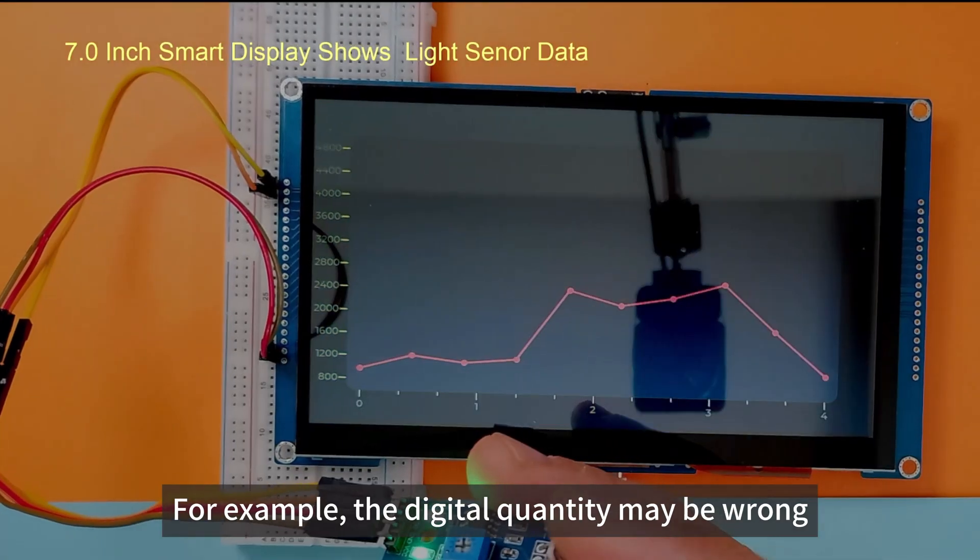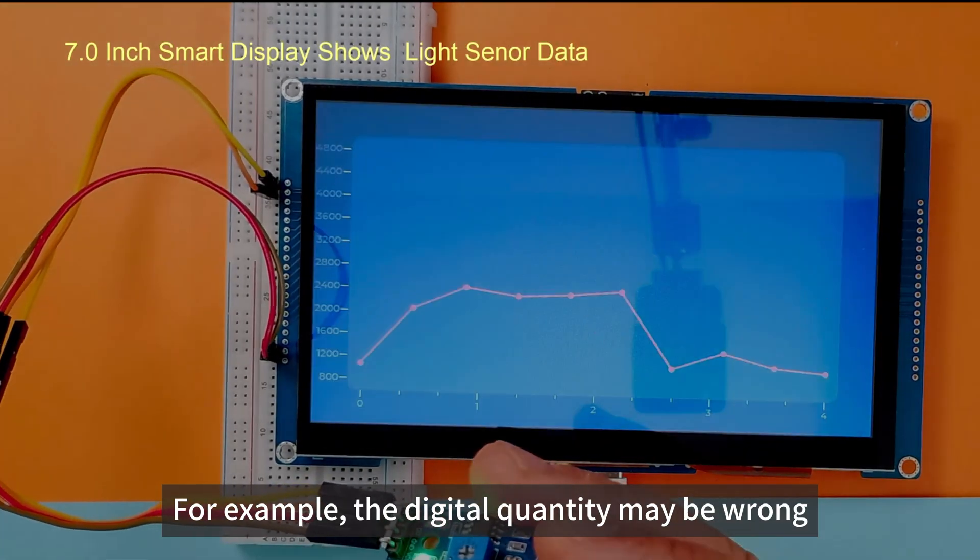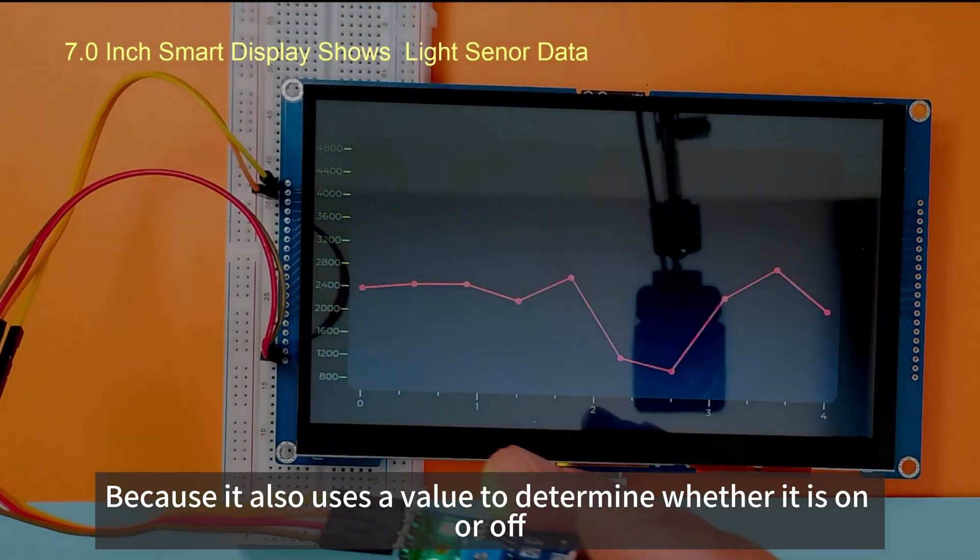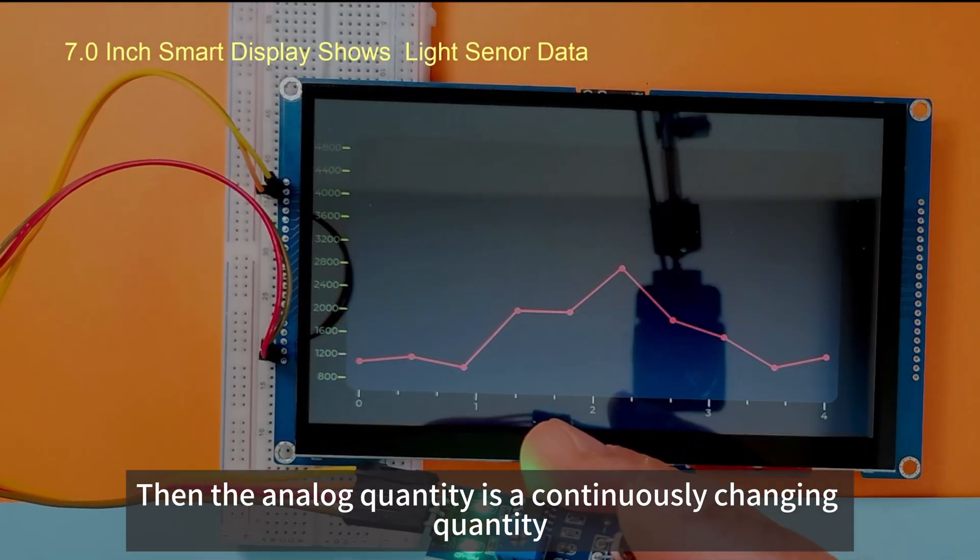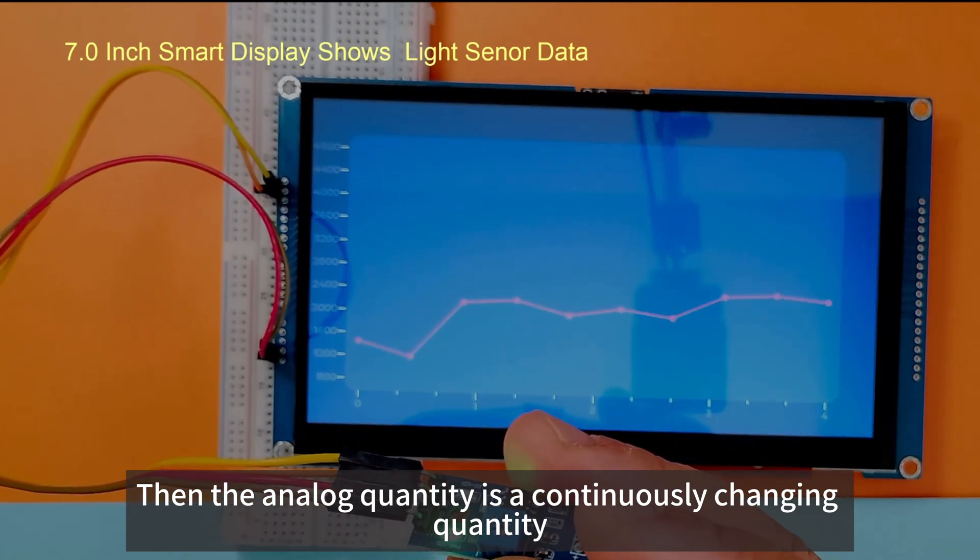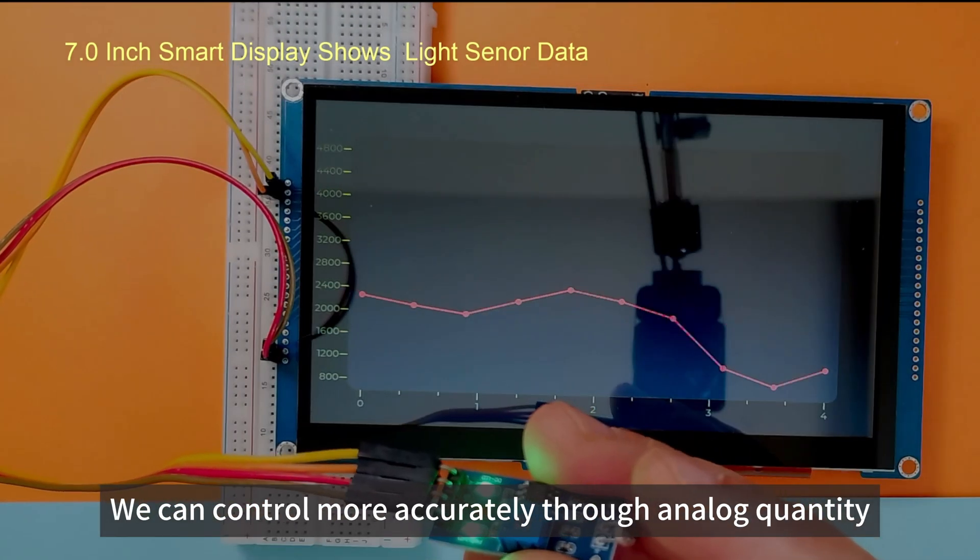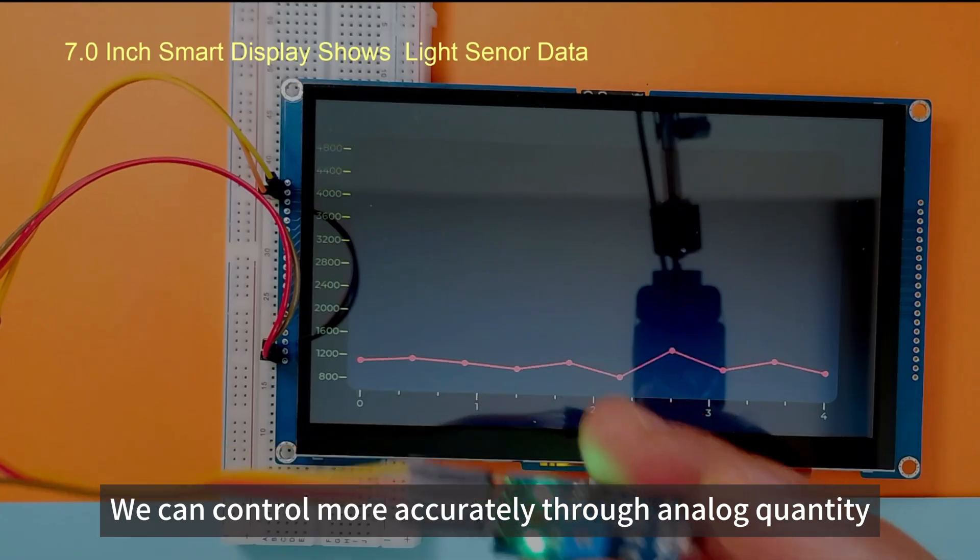For example, the digital quantity may be wrong. Because it also uses a value to determine whether it is on or off. Then the analog quantity is a continuously changing quantity. We can control more accurately through analog quantities.